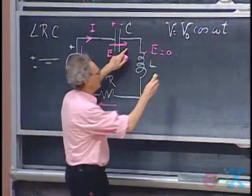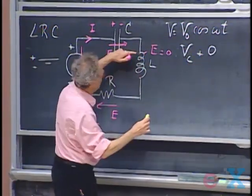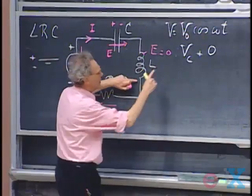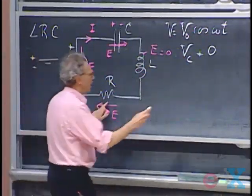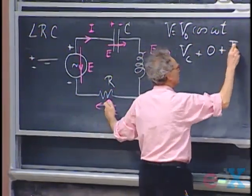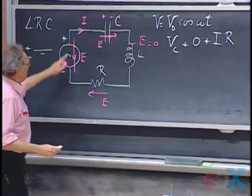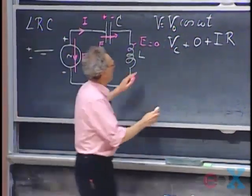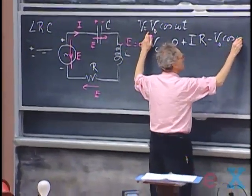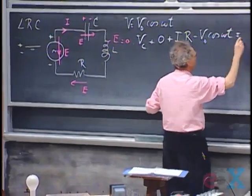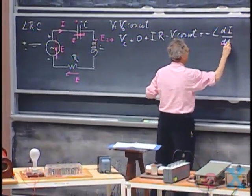I go over this capacitor — that is V_C. Then I go through the wire of the self-inductor; there is no electric field, so the integral E·dL there is zero. Then I go through the resistor, so I get IR. And then I have my power supply, so I get −V₀ cosine ωt. And that, according to Faraday's law, equals −L di/dt.